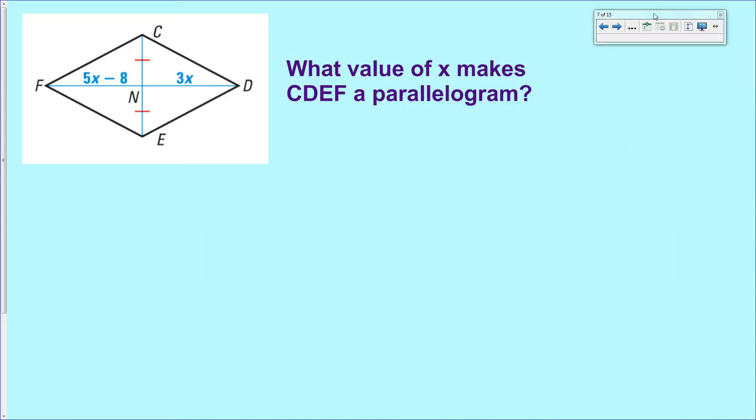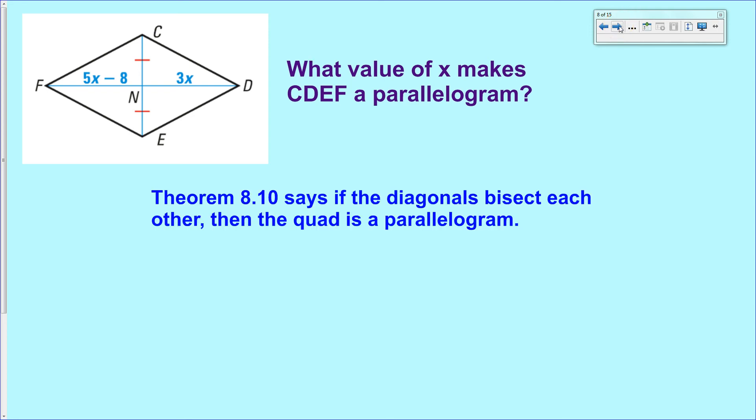Our first example here. Figure out what value of X makes CDEF a parallelogram. Well, to do that, you're going to use theorem 8.10, which says that in a parallelogram or if you have diagonals that bisect each other, then the quadrilateral is a parallelogram. So if we can make these two diagonals bisect each other, we're in good shape.